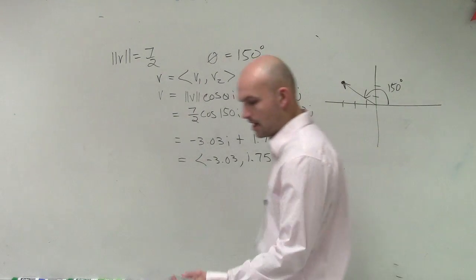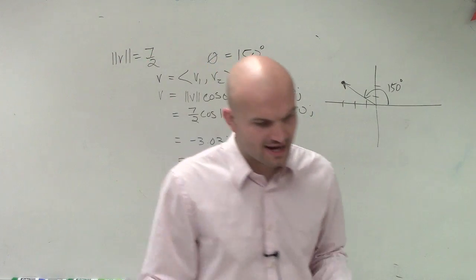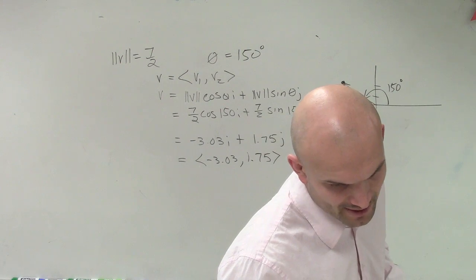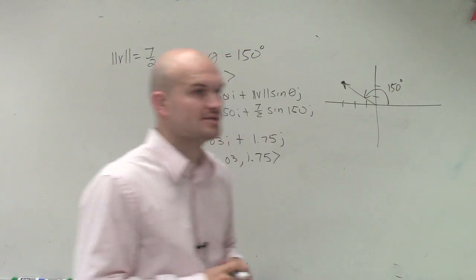It says find the component form and magnitude the angle it makes with the positive axis. So you don't have to graph it, but you just need to know what it looks like.